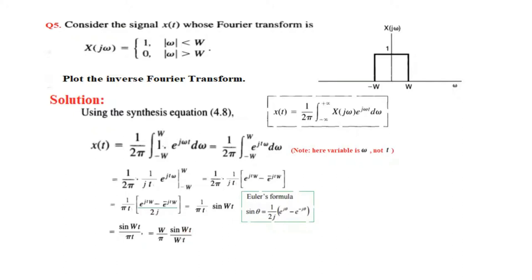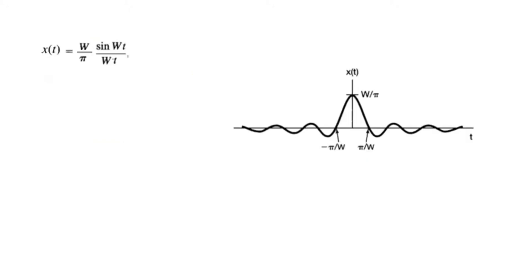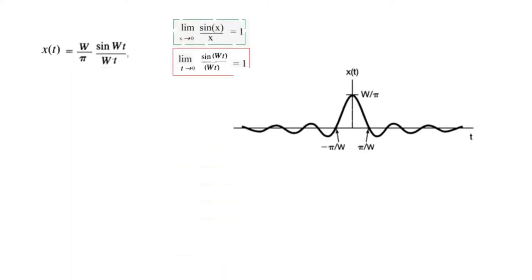We again want to write this in the form of sinc — that is, sine(x)/x — so we multiply and divide by W. This puts it into sinc form. At t = 0, using the limit that sine(x)/x → 1 as x → 0, the value becomes W/π. So W/π is the amplitude at t = 0.